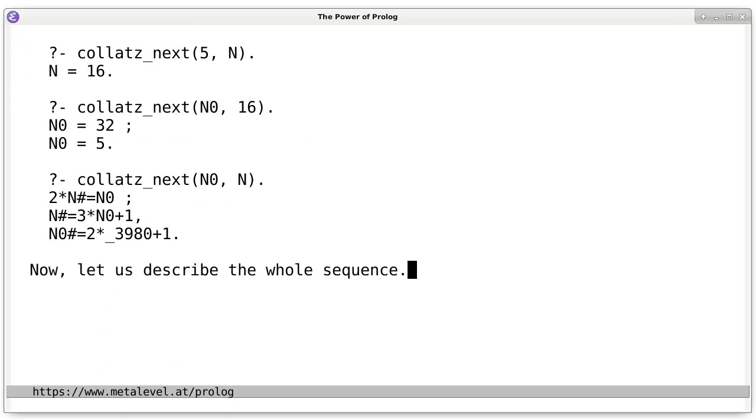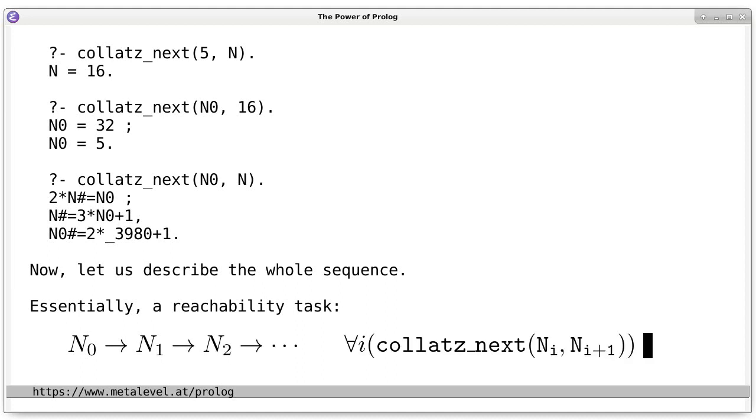Now, let us describe the whole hailstone sequence. Essentially, this is a reachability task. We are starting from some integer n0, go to the next integer n1, then n2, and so on. And for each successive pair of integers, this relation we have just defined, this collatz_next predicate must hold. So, now we only have to describe in Prolog what it means for an integer to be reachable from some other integer.